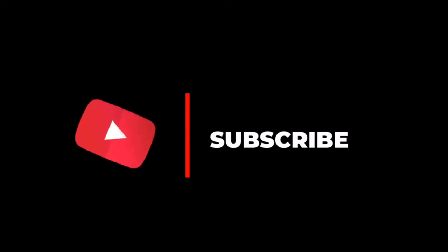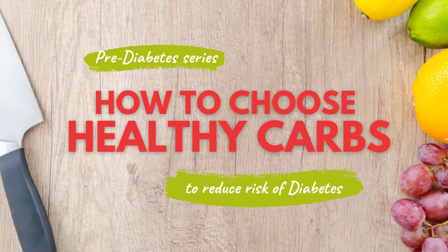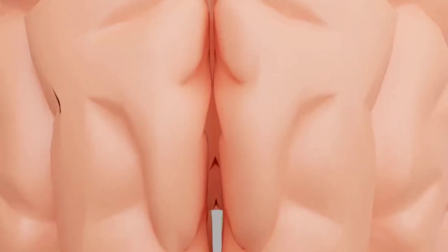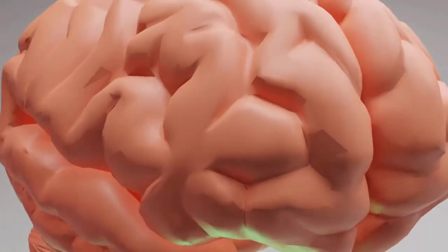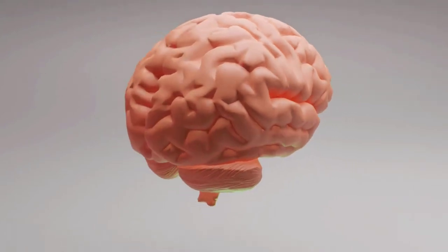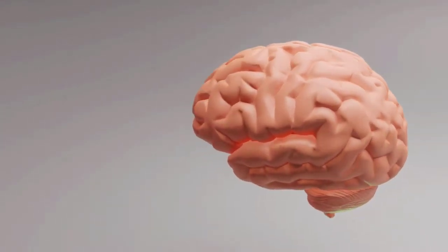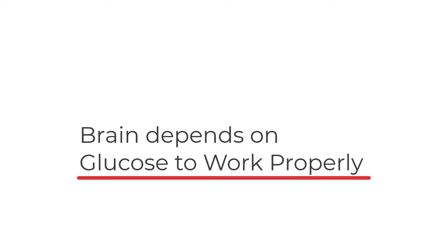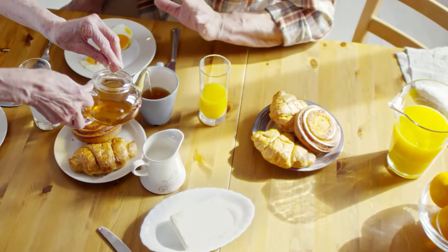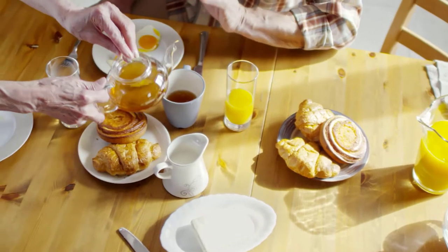In today's episode we are talking about carbohydrates. Sugar or carbohydrates are very important for the body. Our brain functions on glucose. If we do not have enough sugar in our blood, our brain cannot function properly because our brain cannot use other things except for maybe ketones and only sugars to function. We need sugar in our blood, but we don't need too much.